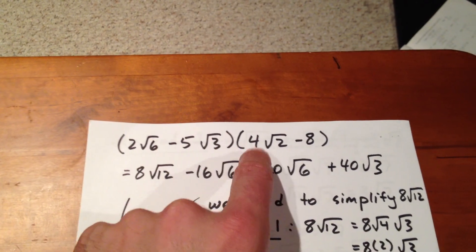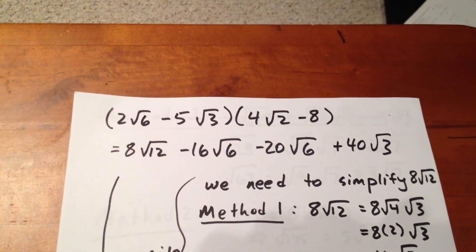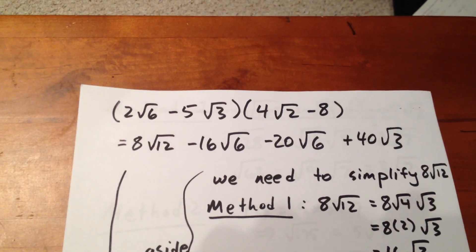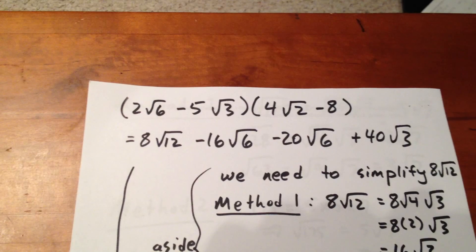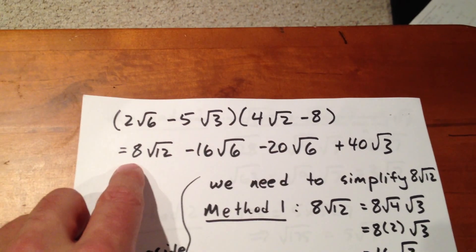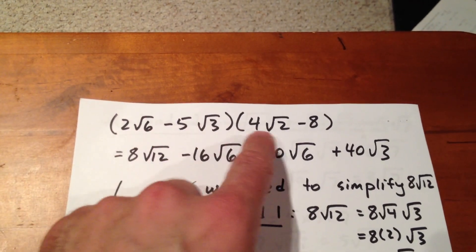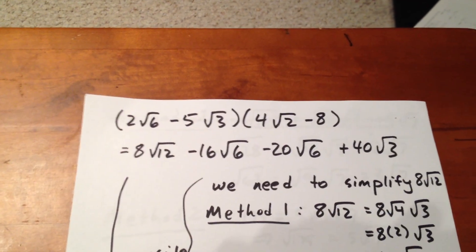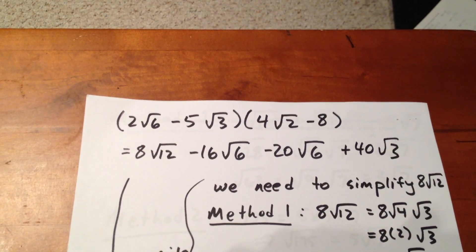We want to multiply 2√6 times 4√2. We multiply the portions outside of the square root sign: 2 times 4 equals 8. Then we multiply the portions inside the square root sign: 6 times 2 is 12. Therefore, by the laws of exponents, √6 times √2 is √12, giving us 8√12.